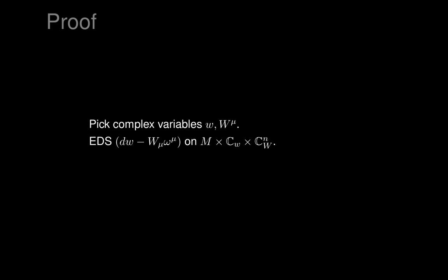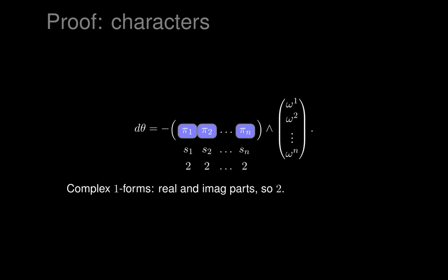On our new manifold M crossed with various copies of the complex numbers, we use this exterior differential system generated by a single complex-valued one-form. If you like, it's generated by the real and imaginary parts of that one-form. Let's look at the characters — I'll leave you to check what d theta is. If you take its exterior derivative, you can collect all non-omega terms into the pi's on the left side, and the omega terms on the right. Each term has a factor of omega because there are no omega-bar wedge omega-bar terms. So we find, besides the dW terms, one pi in each column of the tableau.